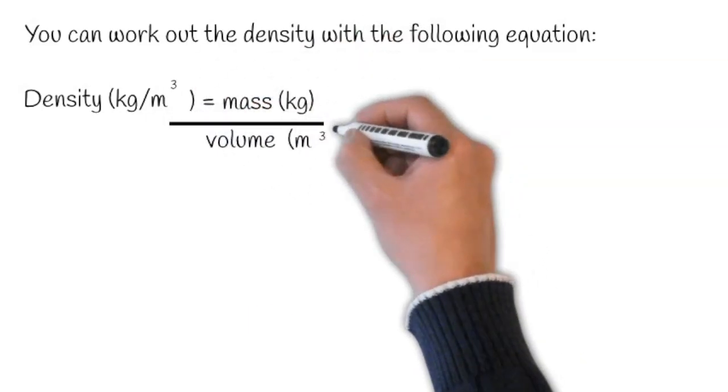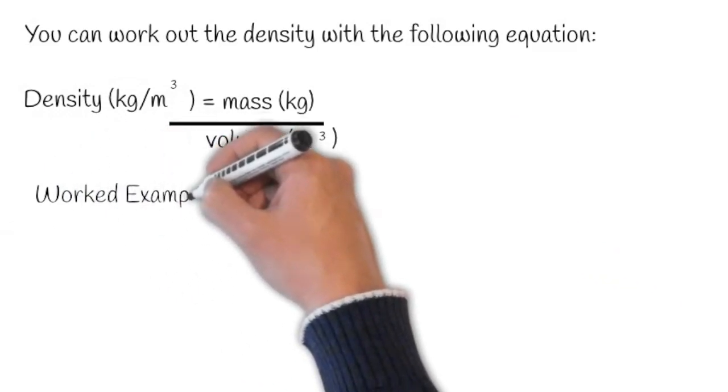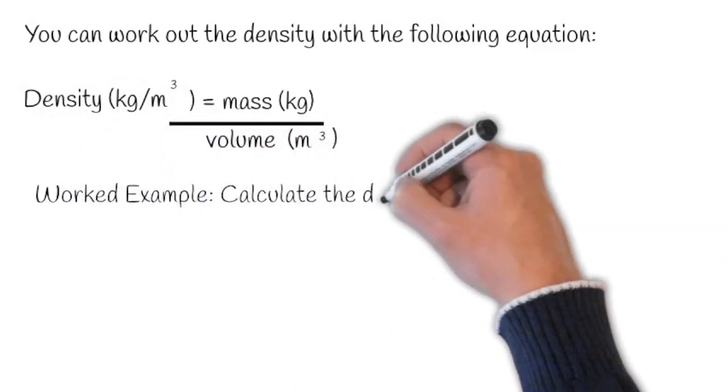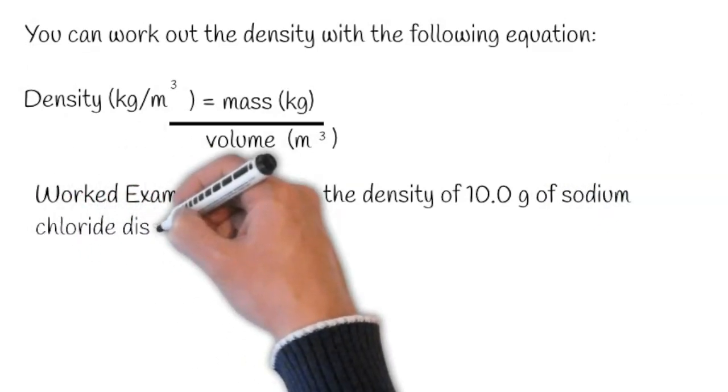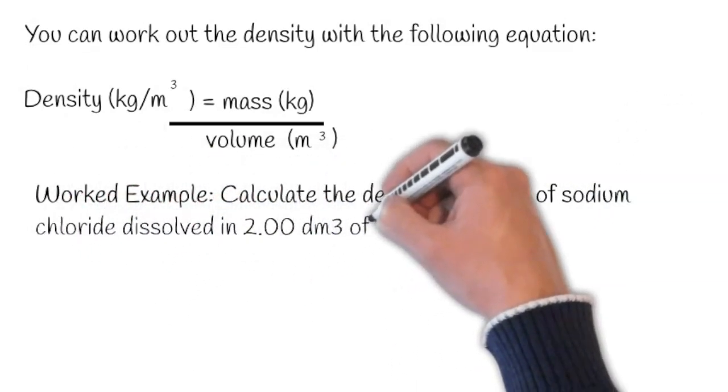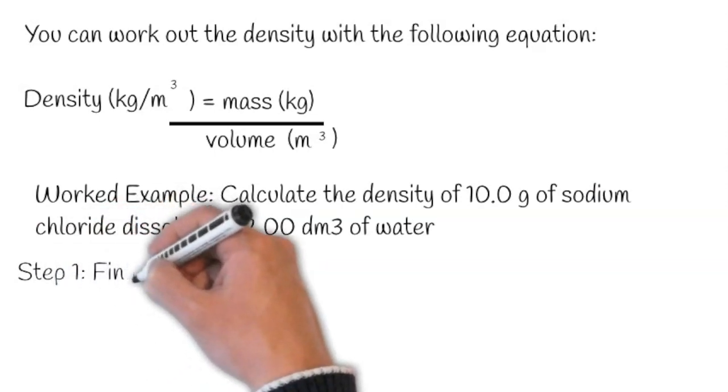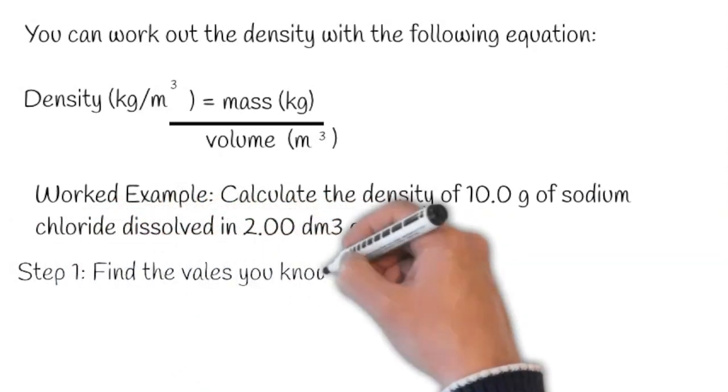Let's go through a worked example. Calculate the density of 10 grams of sodium chloride dissolved in 2 decimeters cubed of water. Step one: we need to find the values that we know.